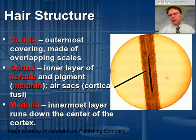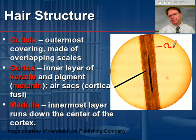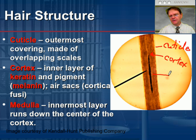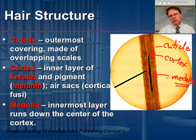Now, as you take a look at this micrograph, can you identify the four different parts? On the very outside we can see the cuticle. Going further in, where all the pigment is, is the cortex. And then we have the medulla. Keep in mind, not every specimen you look at is going to have a medulla.